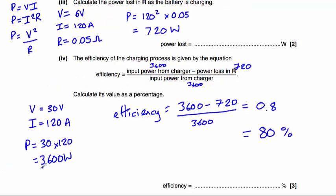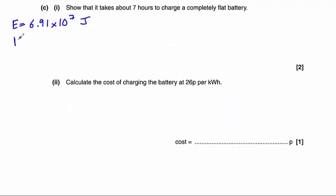Now we know that that energy can be supplied at a rate of 3,600 watts, take away the 720 watts that is lost in the charger. So the power supplied to the battery when it's charging is 3,600, take away 720,